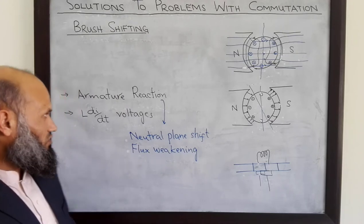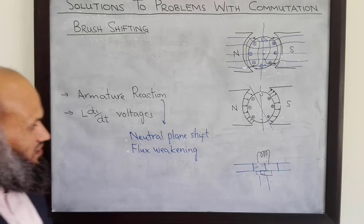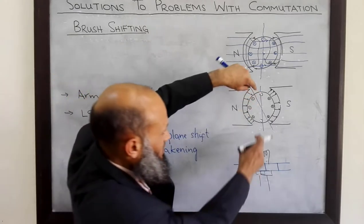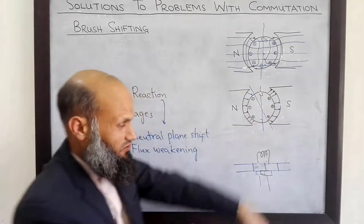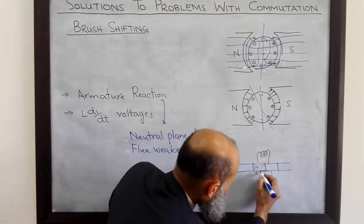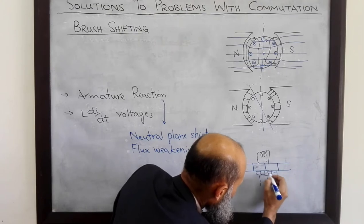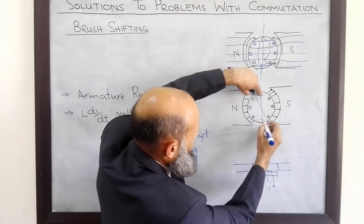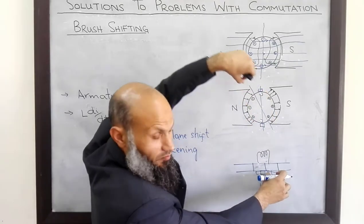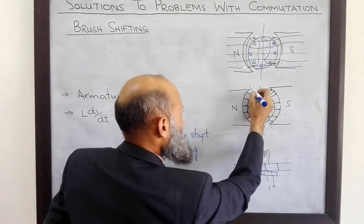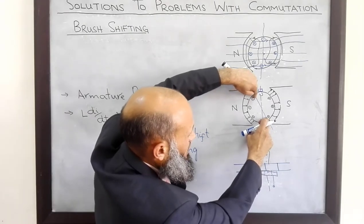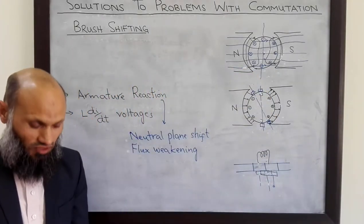So where is the possible solution? One possible solution is brush shifting. Instead of placing the brushes at the original location, we place the brush at a new location corresponding to the shifted neutral plane. So instead of shorting the coil at the old position, we move the brush to a new position. Now the coils being shorted will be at the new neutral plane location, and low voltage will be induced in those coils.